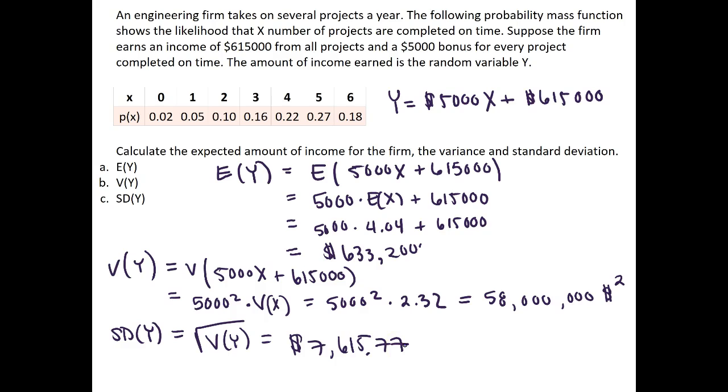So the amount of money that is earned by the firm varies on average $7,615.77.